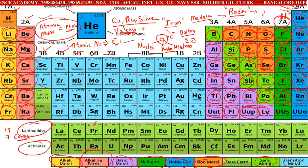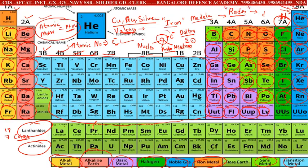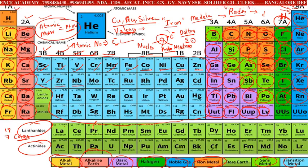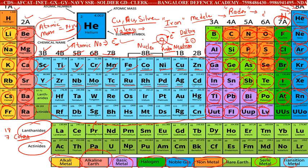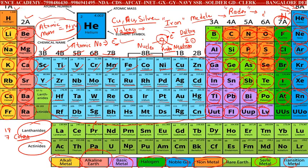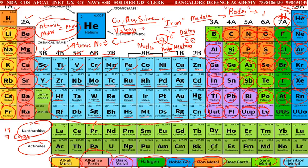Transition metals are the ones in the center of the screen — they change properties. Examples include scandium, titanium, vanadium, chromium, manganese, iron, cobalt, nickel, copper, zinc, yttrium, zirconium, niobium, molybdenum, technetium, ruthenium, rhodium, palladium, silver, cadmium, hafnium, tantalum, tungsten, rhenium, osmium, iridium, platinum, gold, mercury, rutherfordium, dubnium, seaborgium, bohrium, hassium, meitnerium, darmstadtium, roentgenium, and copernicium.